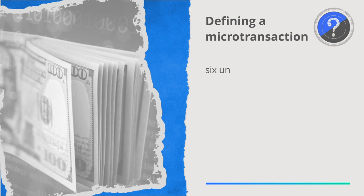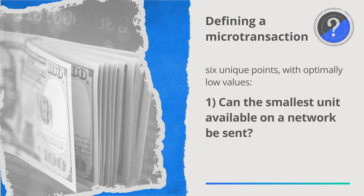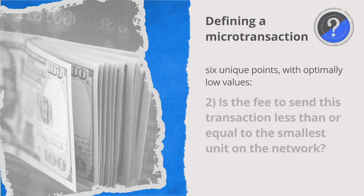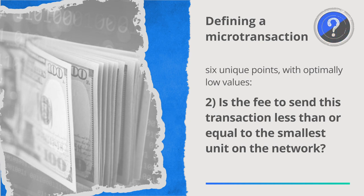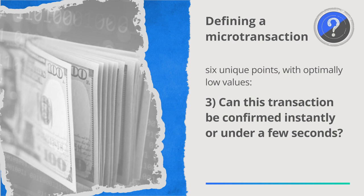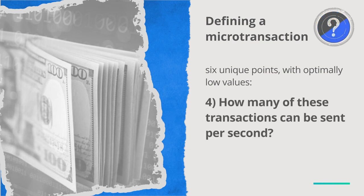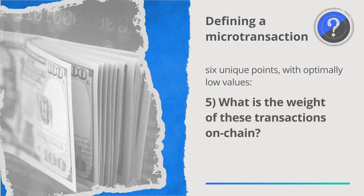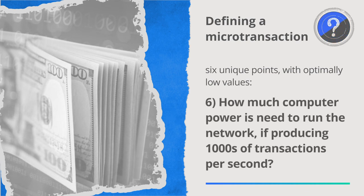This can be categorised into six unique points, all of which need to produce optimally low values: Can the smallest unit available on the network be sent? Is the fee to send this transaction less than or equal to the smallest unit on the network? Can this transaction be confirmed instantly or under a few seconds? How many of these transactions can be sent per second? What is the weight of these transactions on-chain? And how much computer and internet power is needed to run and stay in sync with the network if it's producing hundreds of thousands of transactions per second?